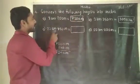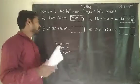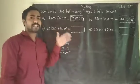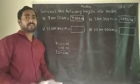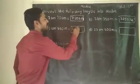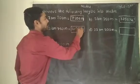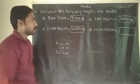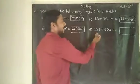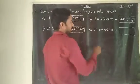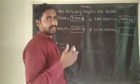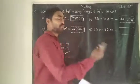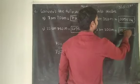Part (c): 21 kilometers and 750 meters. 21 kilometers means 21000 meters. And 750 meters stays as it is. Total: 21750 meters. Part (d): 10 kilometers and 200 meters. 10 kilometers means 10000 meters. Plus 200 meters: answer is 10200 meters.